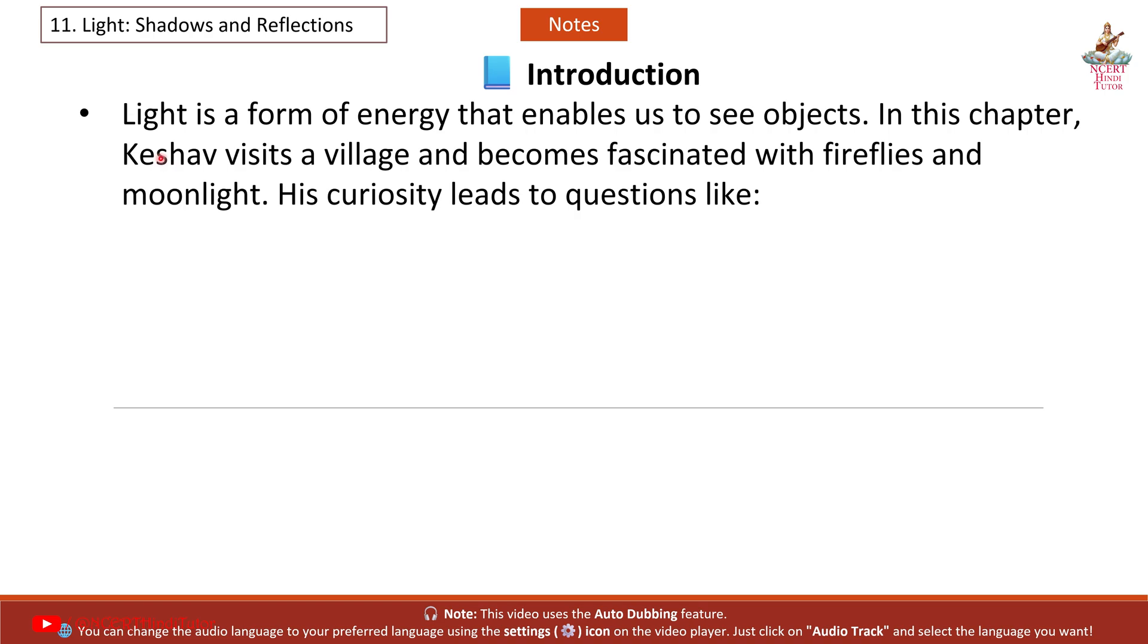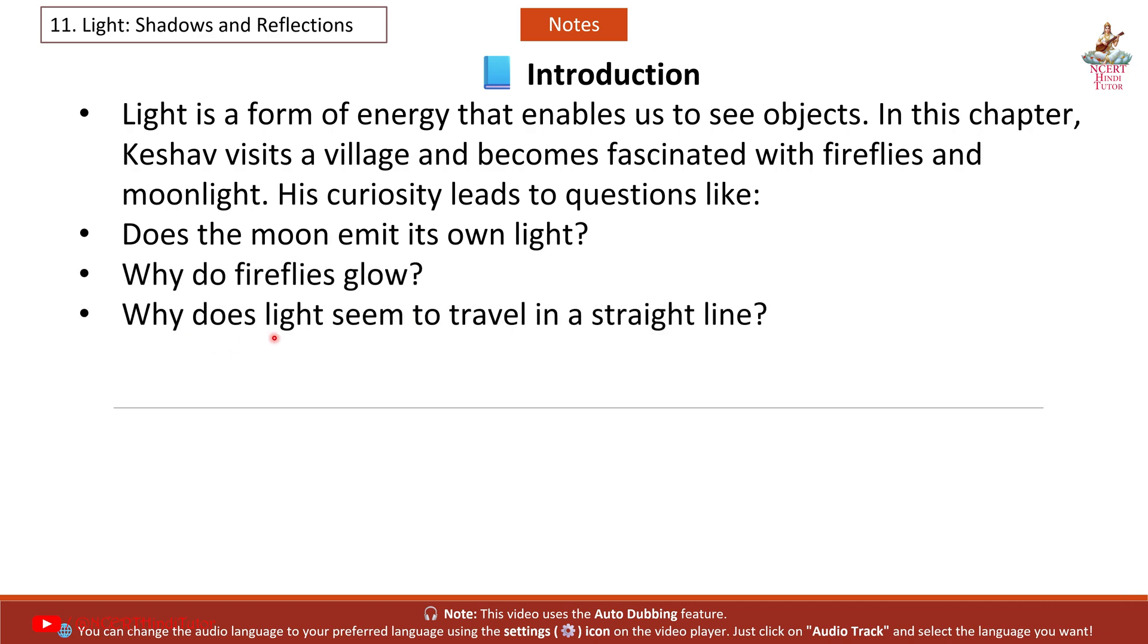Introduction: Light is a form of energy that enables us to see objects. In this chapter, Keshav visits a village and becomes fascinated with fireflies and moonlight. His curiosity leads to questions like: Does the moon emit its own light? Why do fireflies glow? Why does light seem to travel in a straight line?